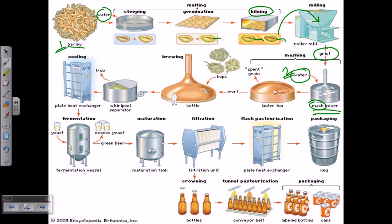Once we get the mash done, we take it and add it into another chamber called the lauter tun. As you can see, it is made up of copper. This is very important to produce quality beer. The lauter tun and the rest of the chambers where fermentation will go on must be made with copper, because copper can act as an important enzyme cofactor during the process of fermentation, helping to achieve fermentation more quickly.